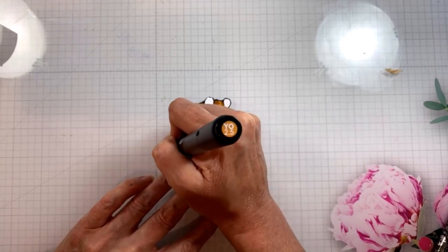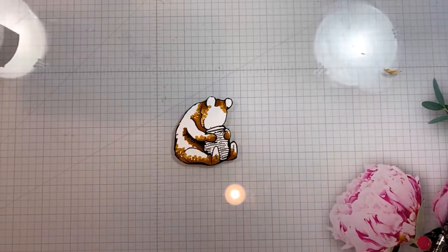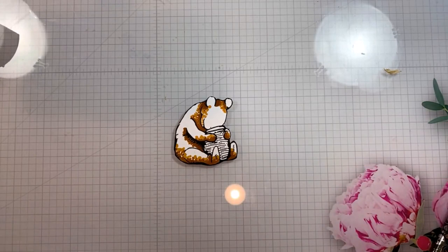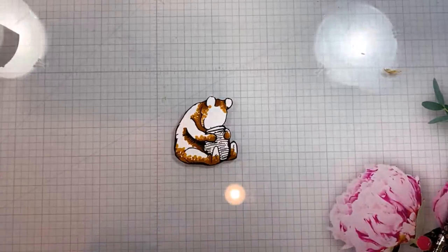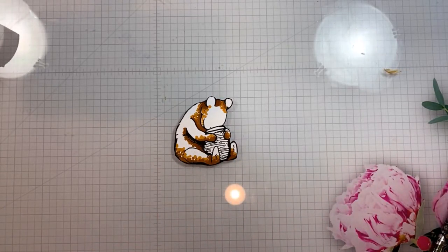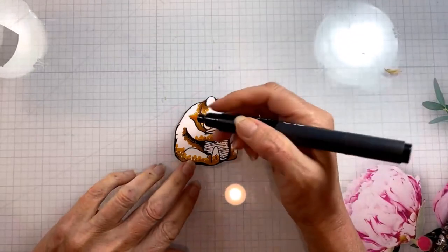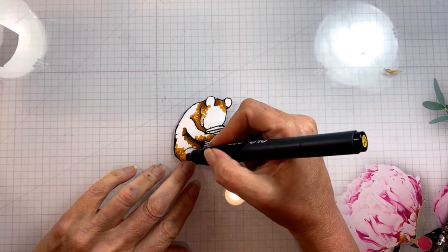Now I've moved to my second color and I'm going in just to the edges of that darkest color and adding some larger dots here. That means use a little bit more pressure and hold the marker down just a little bit longer to create those larger dots.